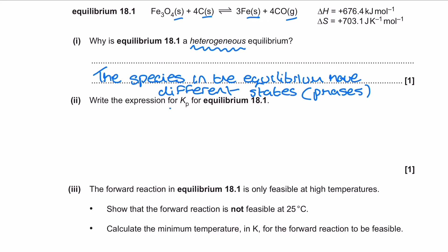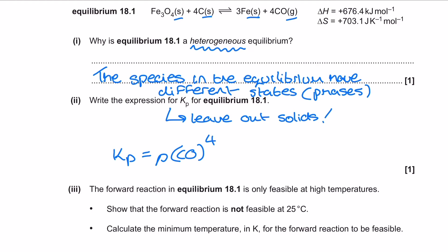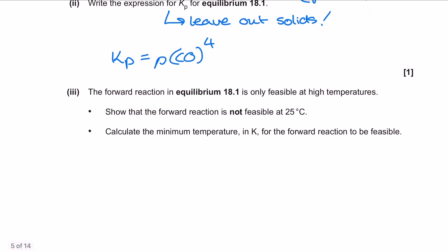We are then asked for the expression for KP for equilibrium 18.1. I've got to make sure I leave the solids out of this one, which is what I'd do for any heterogeneous equilibrium KP or KC expression — solids and liquids are excluded. Specifically because KP is all about gases, all I've got left is to show the partial pressure of carbon monoxide to the power of 4.